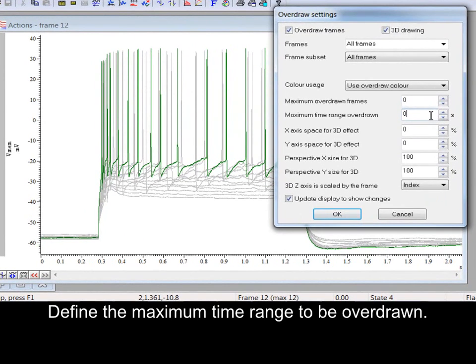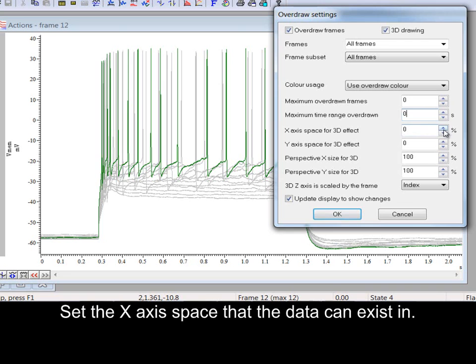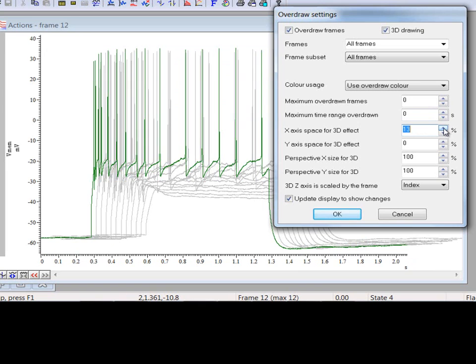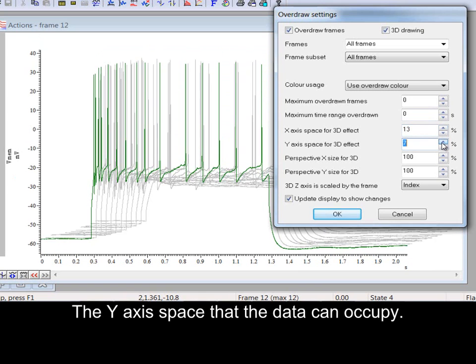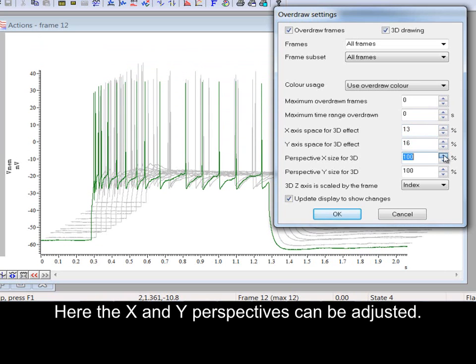Define the maximum time range to be overdrawn. Set the X-axis space that the data can exist in. The Y-axis space that the data can occupy. Here, the X and Y perspectives can be adjusted.